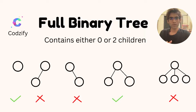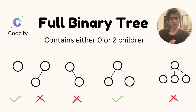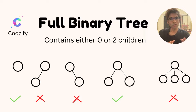The third example contains one child on the right side, so this is a binary tree but not a full binary tree. The fourth example contains two children, so this is a full binary tree and also a binary tree. The fifth example contains three children, so this is neither a binary tree nor a full binary tree.